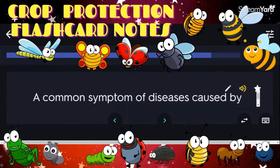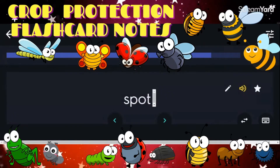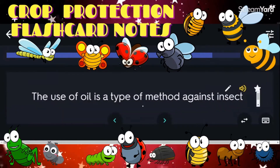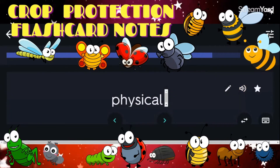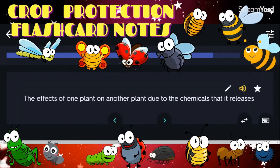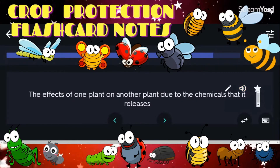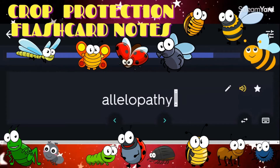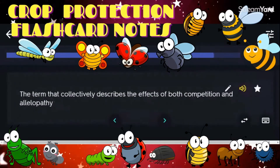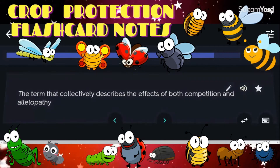A common symptom of diseases caused by fungi: spot. The use of oil is a type of physical method against insect pests. The effects of one plant on another due to the chemicals it releases: allelopathy. The term that collectively describes the effects of both competition and allelopathy: interference.